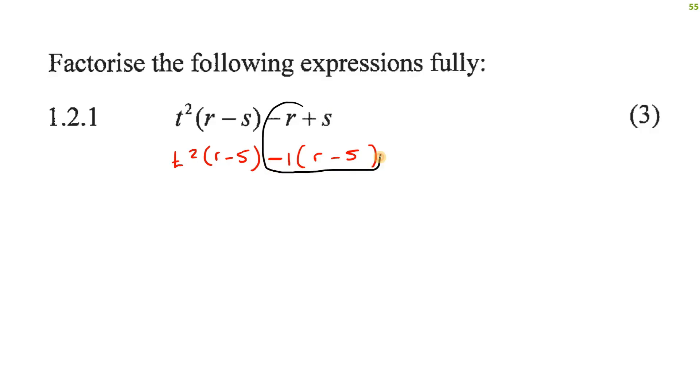So these two things are actually exactly the same on a mathematical level. However, what we've now done is we've made them look to be the same. The reason that that's really good is that we can now factorize and we can take that R minus S bracket out. And then what are we left with? T squared in the first part and minus one in the second part.